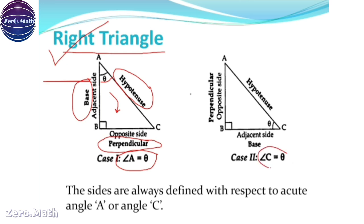Similarly, in case number two, if we take angle C to be theta, the hypotenuse is as usual the longest side, AC. The adjacent side is the side adjacent to angle theta, and the perpendicular is the side opposite to angle theta. The sides are always defined with respect to acute angles A or C — we never define the sides with respect to the right angle.